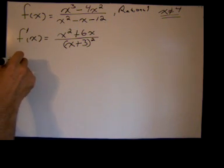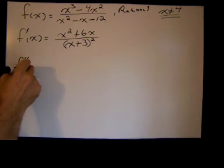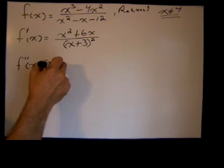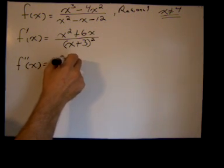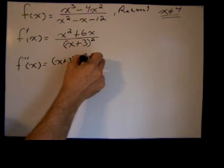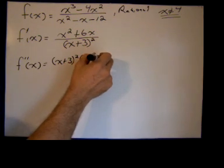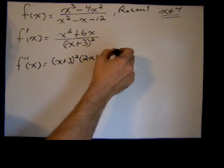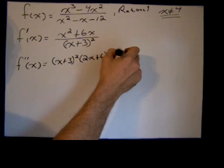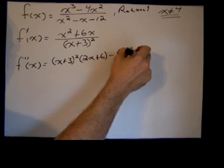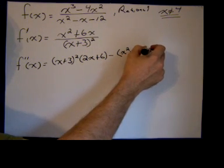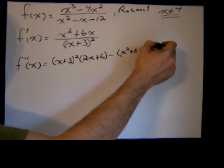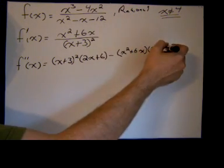So here's the first derivative and our second derivative is, of course, again we have to use the quotient rule. We have the denominator times the derivative of the numerator which is 2x plus 6 minus the numerator which is x squared plus 6x times the derivative of the denominator which is 2.